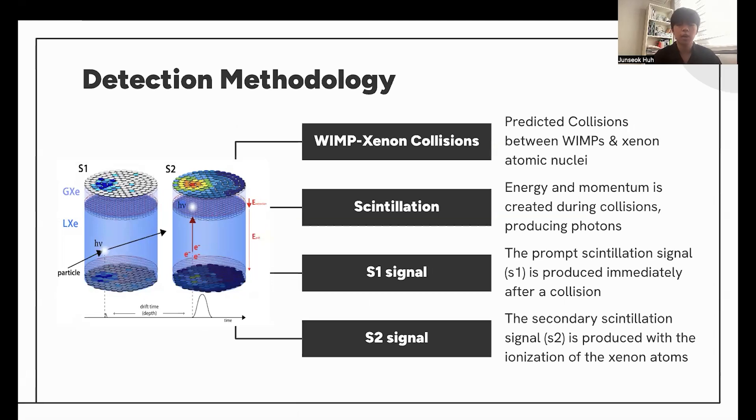The detection methodology: once WIMPs collide with Xenon atomic nuclei, energy and momentum is created during these collisions, which would result in the production of photons, since as WIMP particles come in and they collide with atoms, this would create energy and momentum. This produces two main scintillation signals.